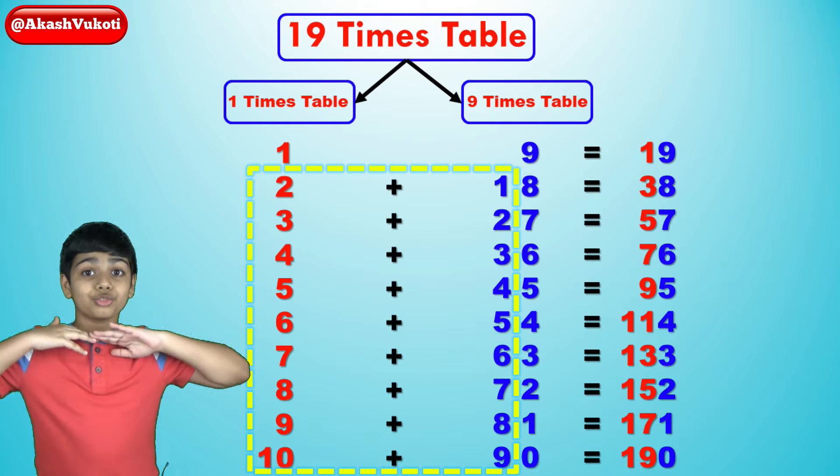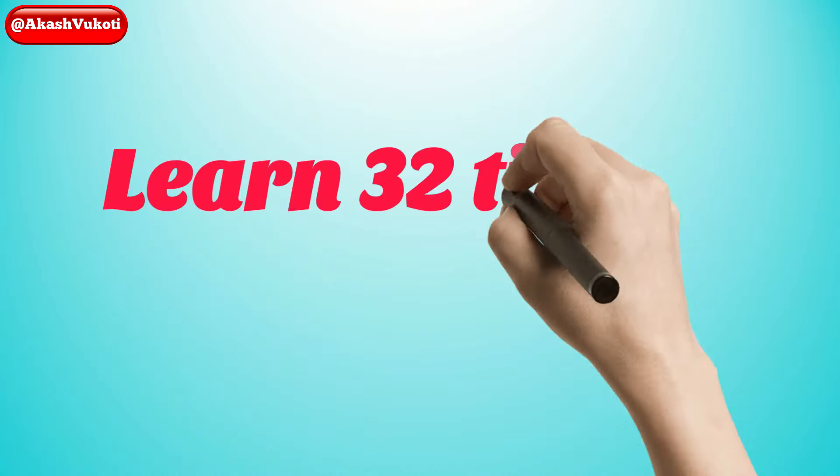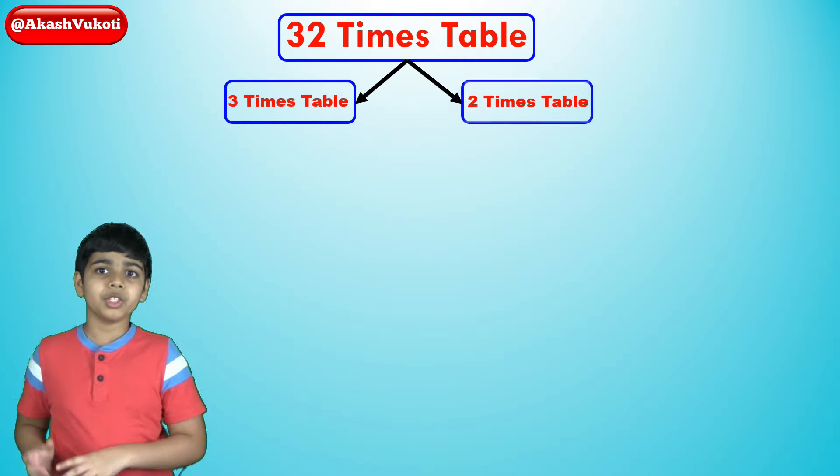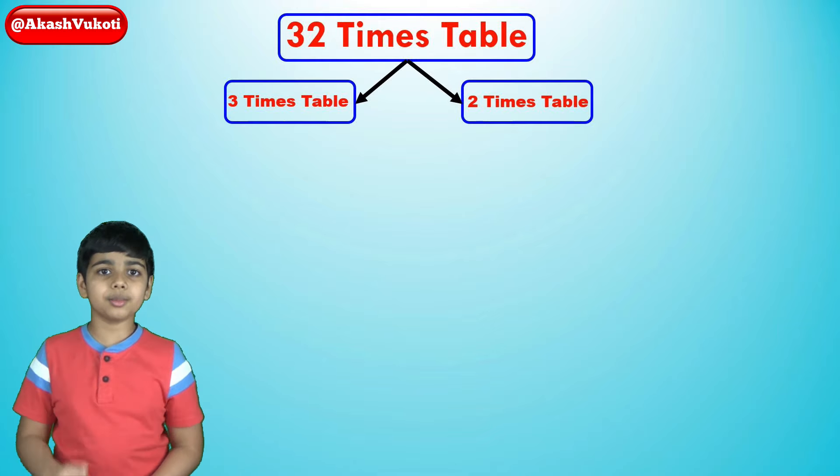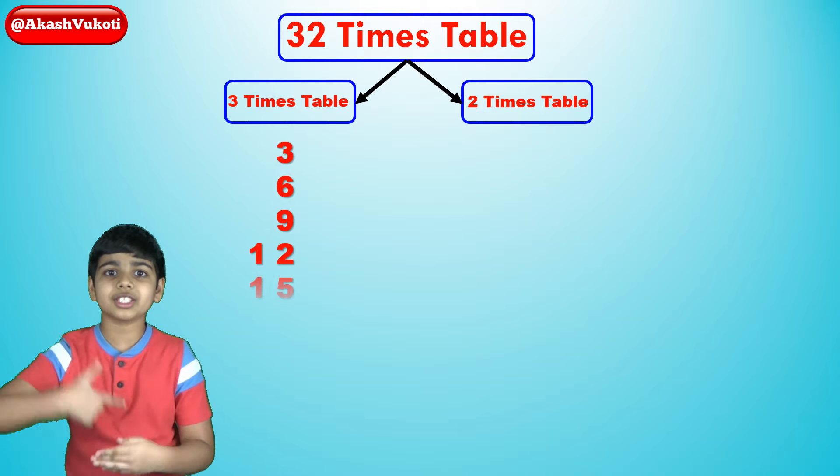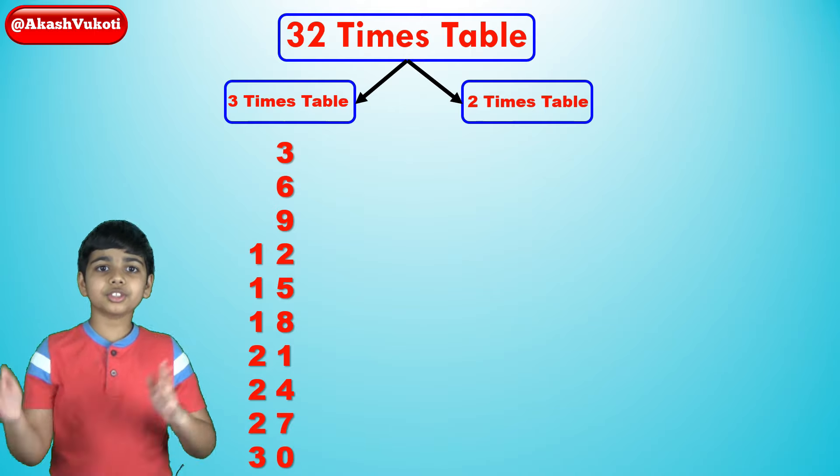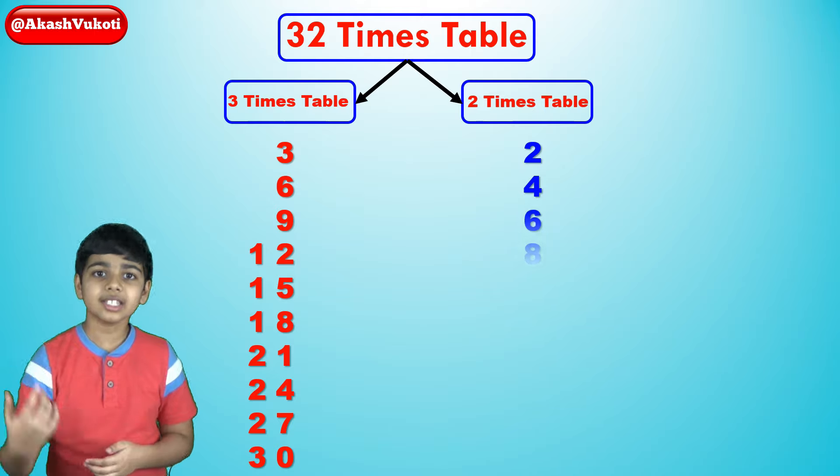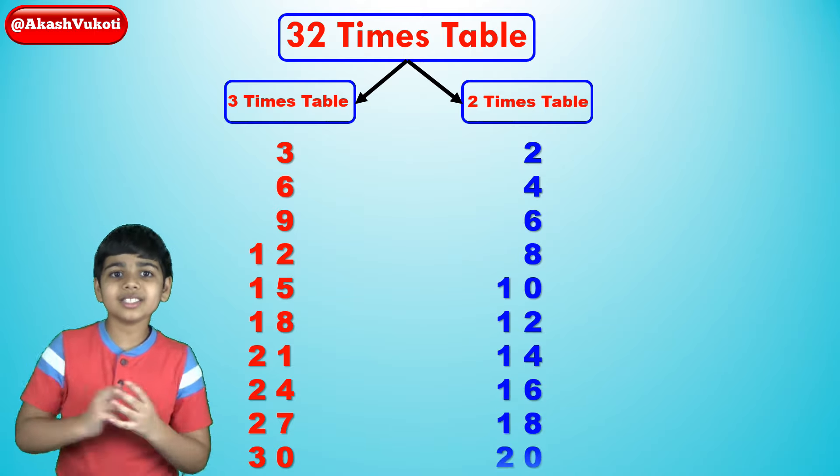Let's pick another number, say 32. Let's write down the 3x table and the 2x table directly next to each other. So that would be 3x table, 3, 6, 9, 12, 15, 18, 21, 24, 27, 30. And then the 2x table goes 2, then 4, 6, 8, 10, 12, 14, 16, 18, 20.